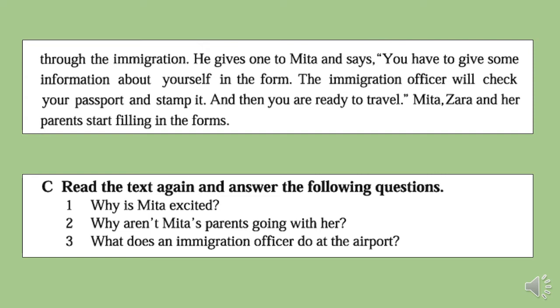Let's check the answers. Our first question is: Why is Mita excited? Mita is excited as it is her first plane journey. Question number two: Why aren't Mita's parents going with her? Mita's parents are too busy with their work, and so they aren't going with her. Our third question: What does an immigration officer do at the airport? At the airport, an immigration officer checks the passport of the passengers and stamps it.